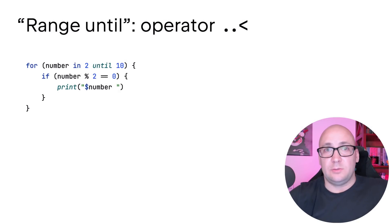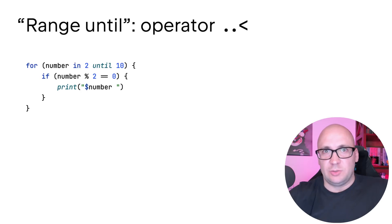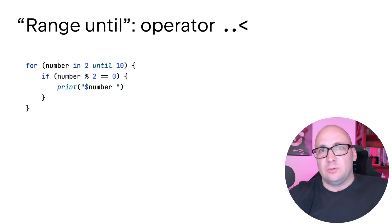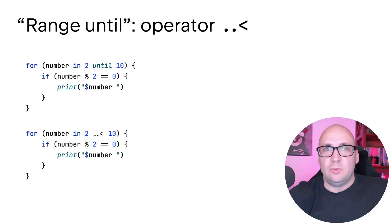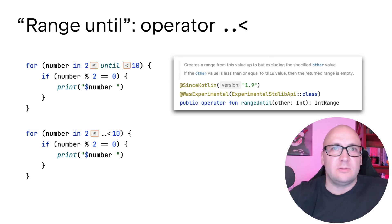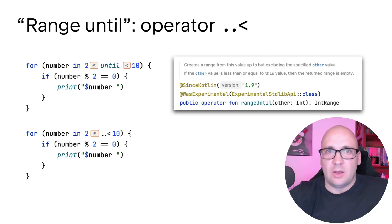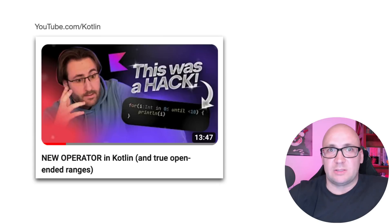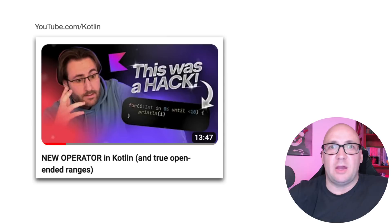The rangeUntil operator has been made stable. Previously, to create an open-ended range you could use the until function, but it wasn't clear if the range includes or excludes the value on the right. The new operator improves the readability of such code and has proven useful and well received. The IDE team also added hints to indicate the inclusiveness of the range. Sebastian also made a good video about this language feature, so check that out as well.